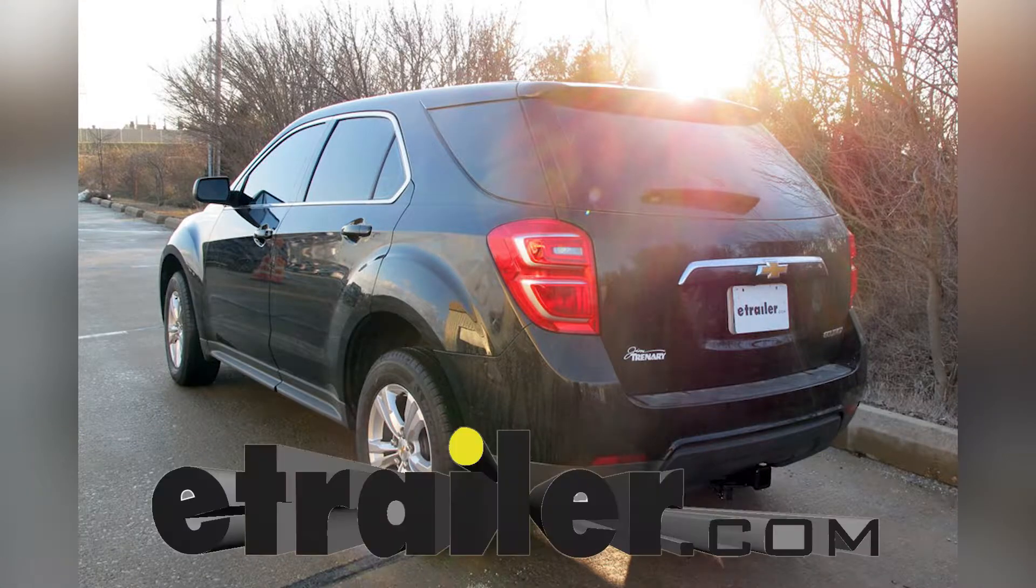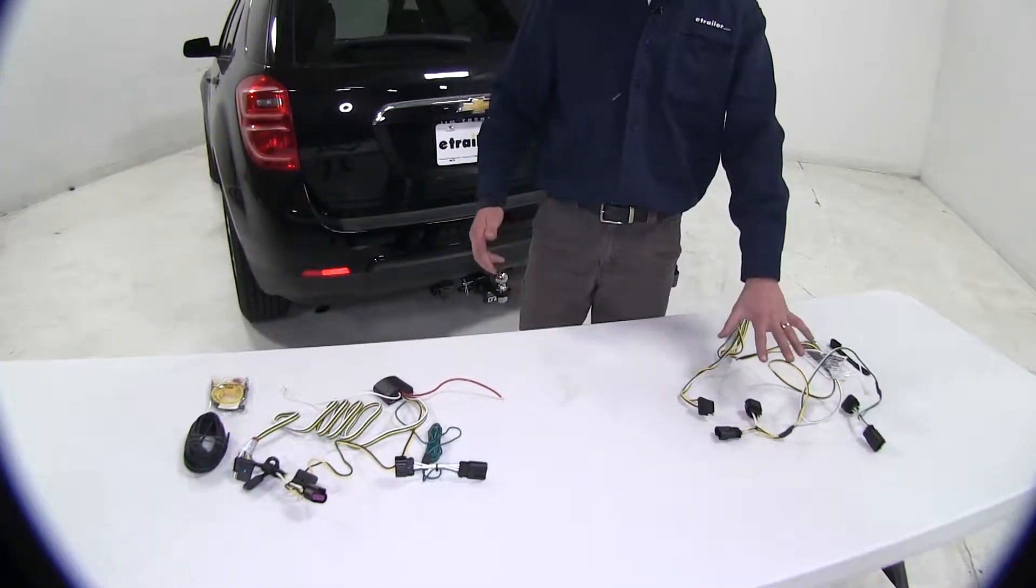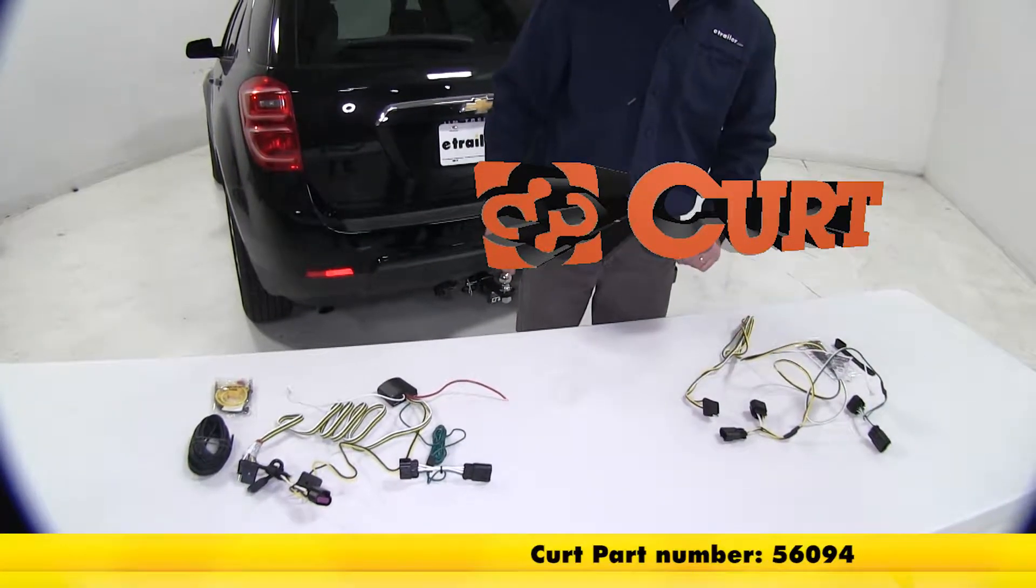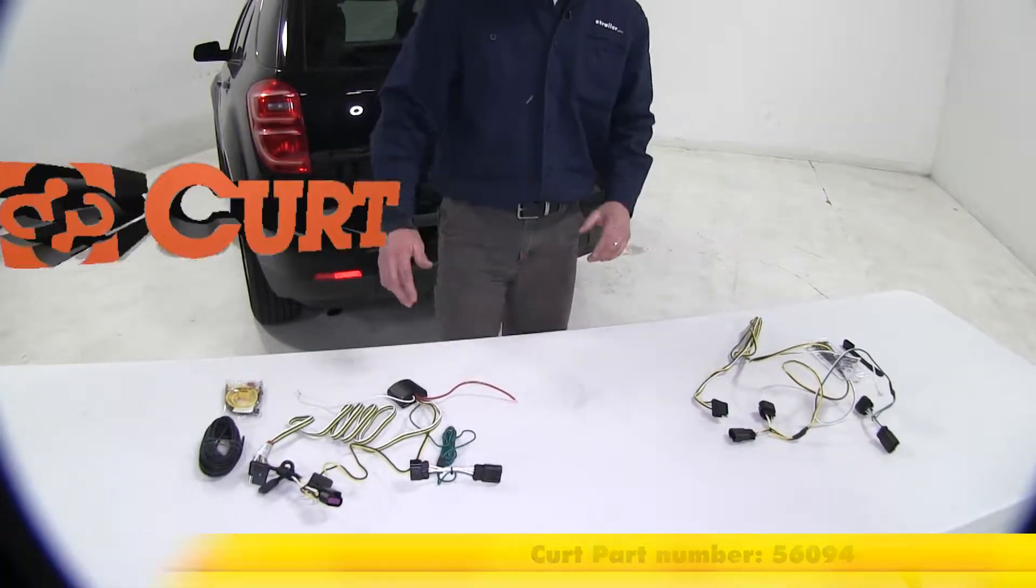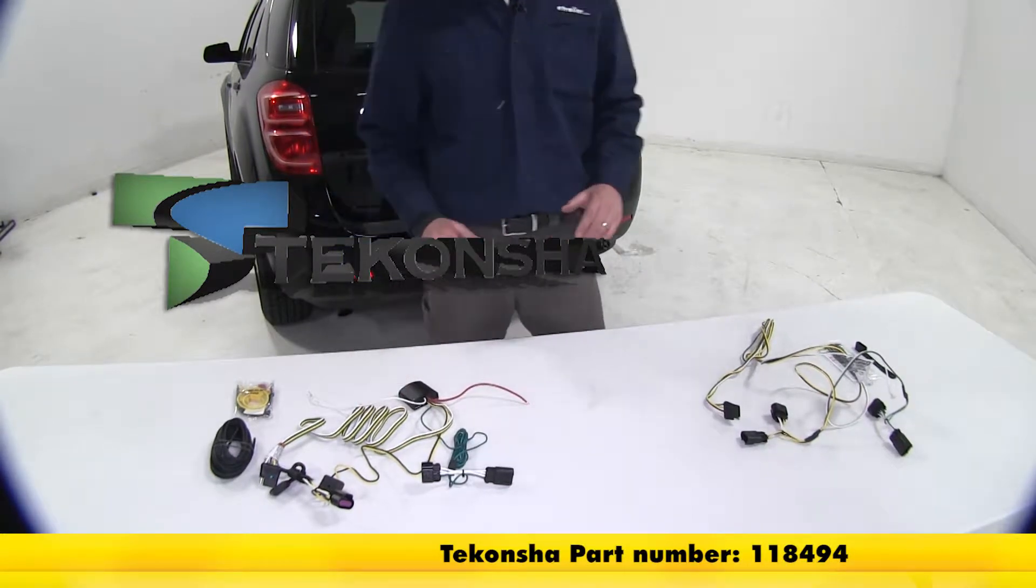Today on our 2012 Chevrolet Equinox, we're going to be taking a look at the best wiring options available. The two wiring options we're going to be taking a look at are the Curt T-connector, part number 56094, and the second one is going to be the Tekonsha T1 connector, part number 118494.